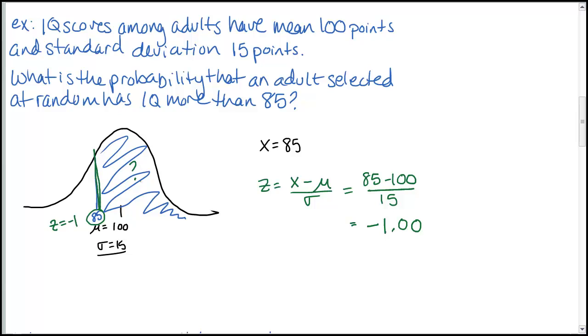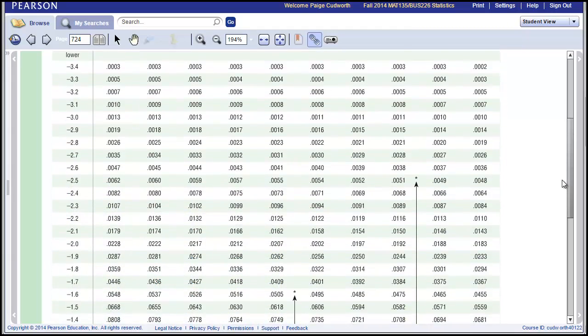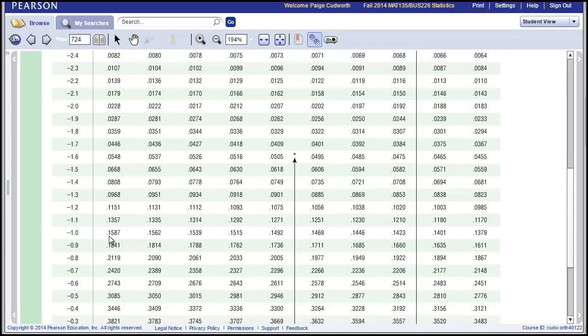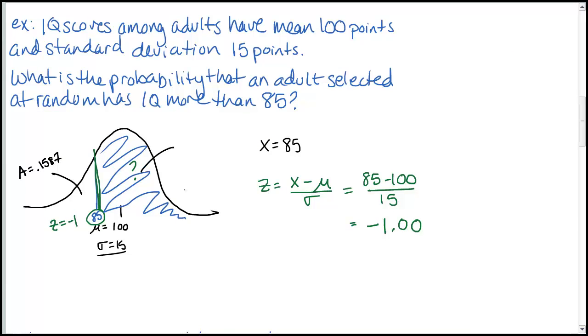So we've got a z-score of negative 1. And we want to know what percentage or what probability is to the right. Now remember, when you look it up in the table, we're going to get that number on the left. We're using the negative z-score chart. We want a z-score of negative 1 exactly, so that gives us an area of .1587. And since this side was not the area we wanted, we have to compute the area on the other side. This would be 1 minus .1587. So this tells us that about 84% of people have an IQ score more than 85.